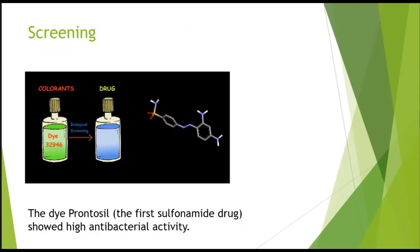By random screening, the first sulfonamide drug, Prontosil, was discovered when a large number of colorants were screened for antibacterial activity. Screening is also used presently and can be performed in vitro experimentally or in silico as virtual screening.